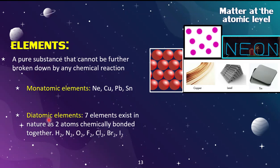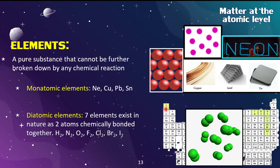For diatomic elements, there are seven that exist in nature as two atoms chemically bonded: hydrogen, nitrogen, oxygen, fluorine, chlorine, bromine, and iodine. On the periodic table they are color coded in yellow. A memory trick: go to atomic number seven, nitrogen, and trace the number seven — that outlines the location of the diatomic elements on the table. Just don't forget about hydrogen, because that's the seventh one.